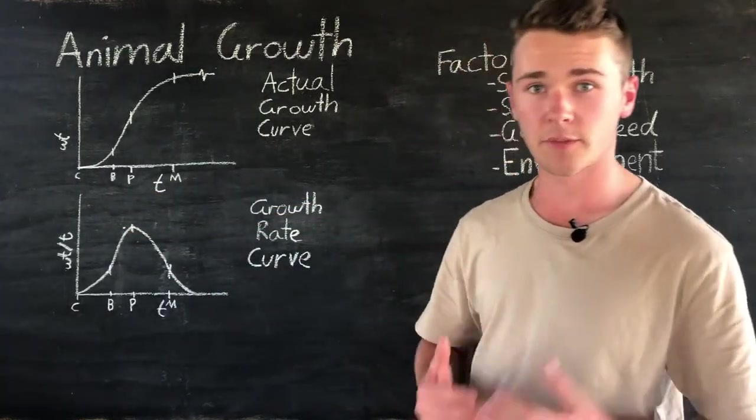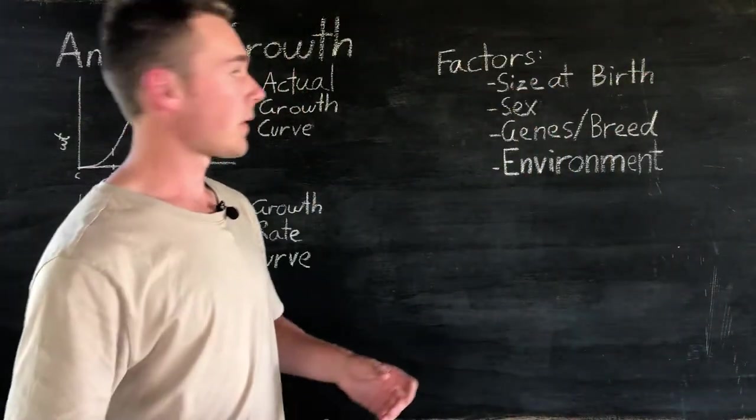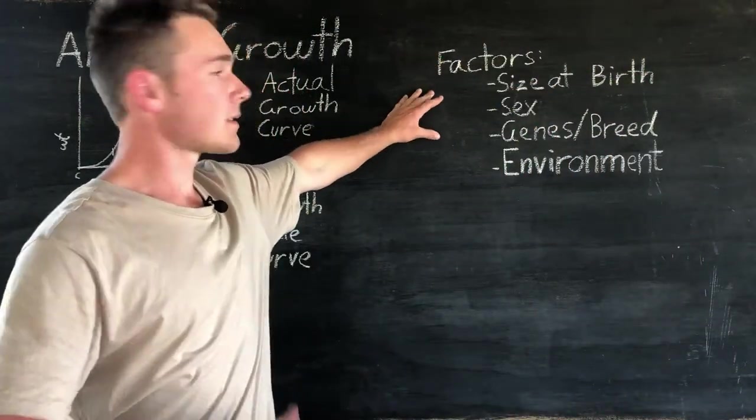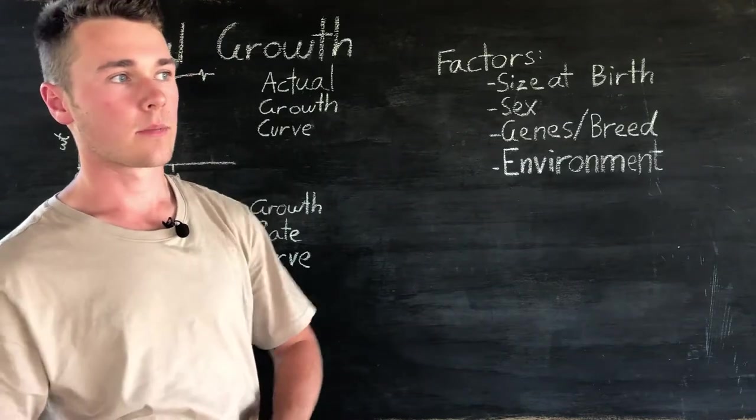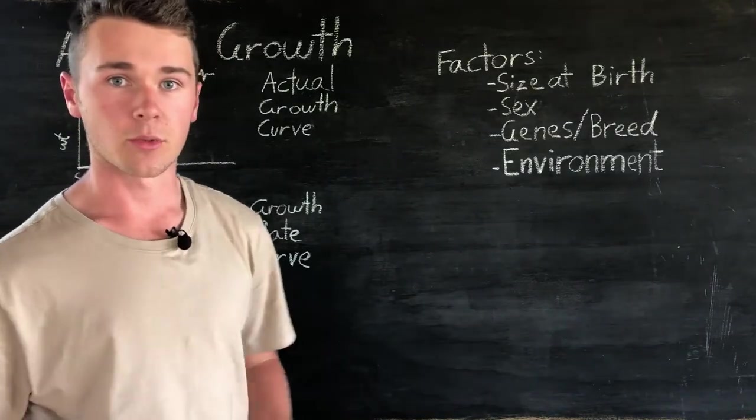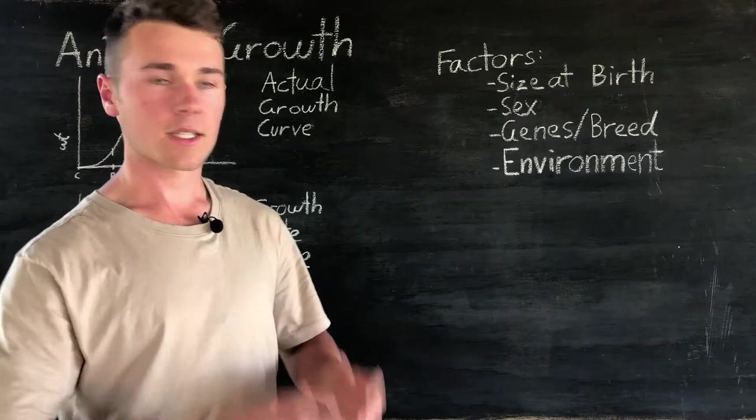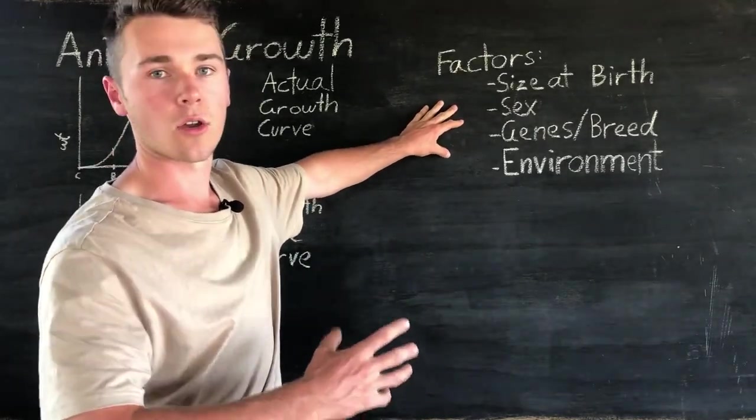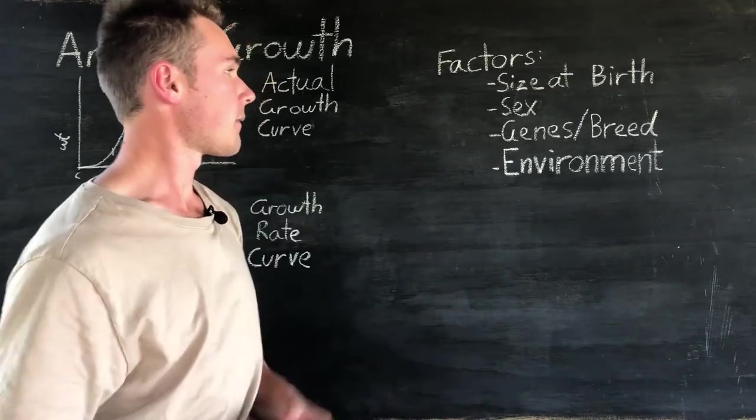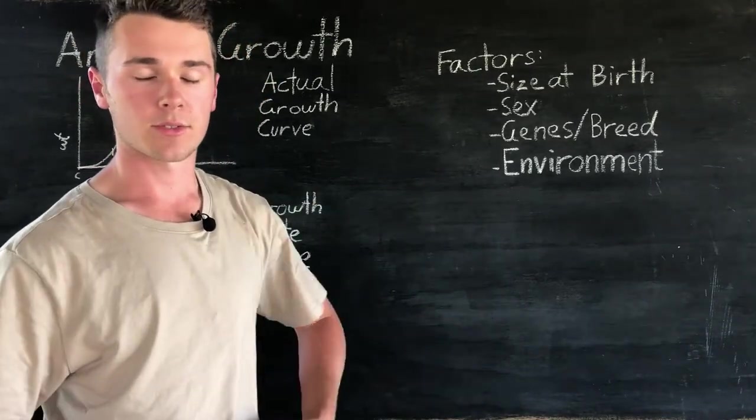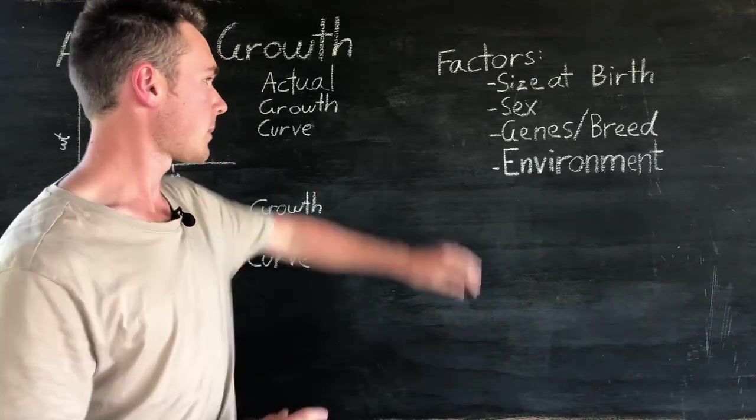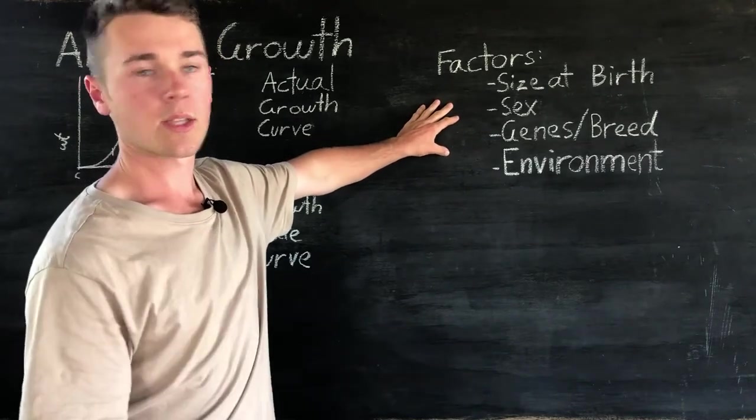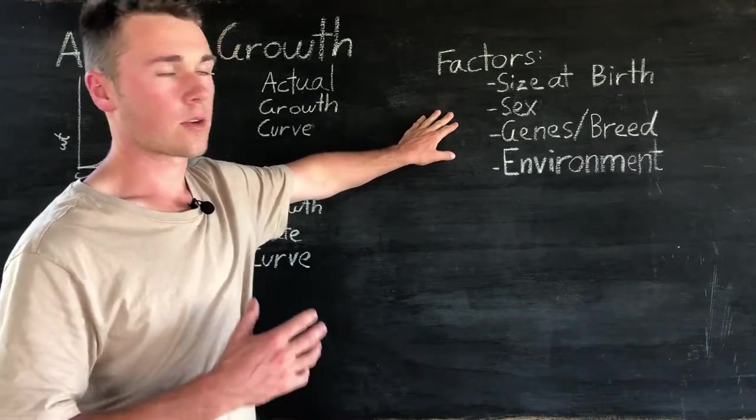There's a couple of factors that will affect the rate of growth of an animal. The first one is the size at birth. So the bigger the animal is at birth the larger it will grow and the larger it will be at maturity. Next we have the sex of the animal. So males tend to grow larger than females and then castrated males are in the middle between them. Now that's because of testosterone hormones which act as a growth promoter.